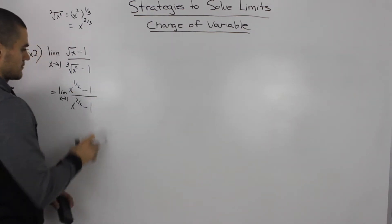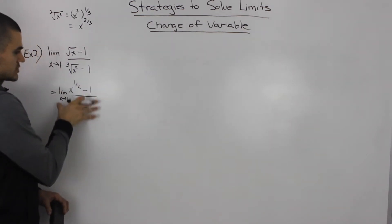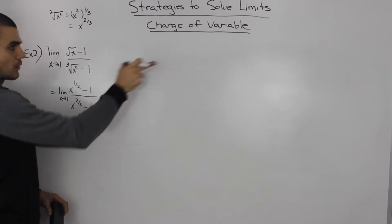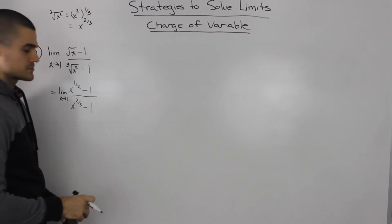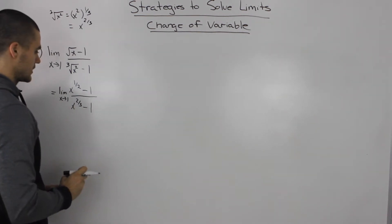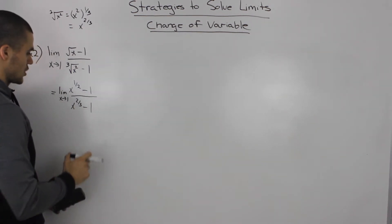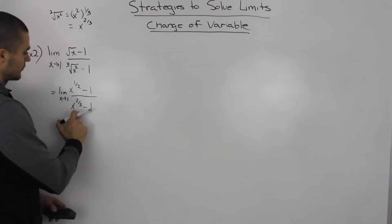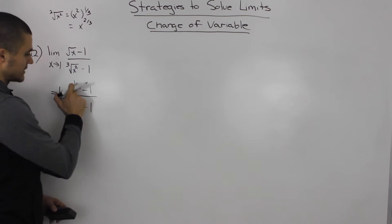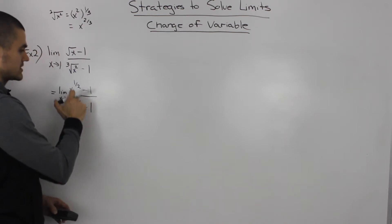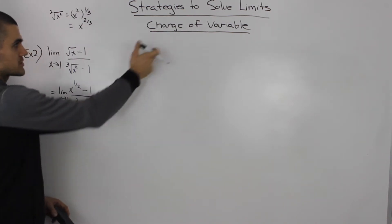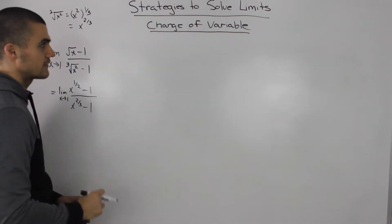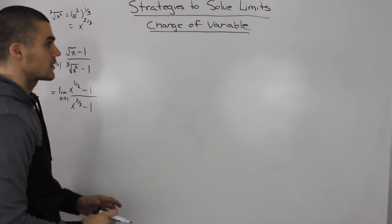I suggest you do the same so you can see it clearly. And then when we do our general substitution it will be a lot easier. Notice how we got these ugly exponents — 1/2 and 2/3 — so we know we're going to have to make a change of variable.